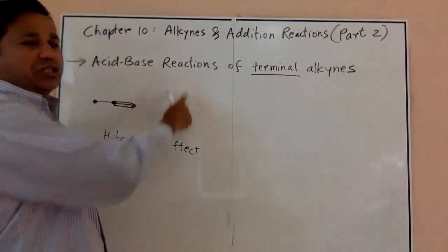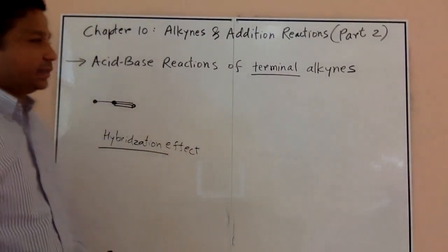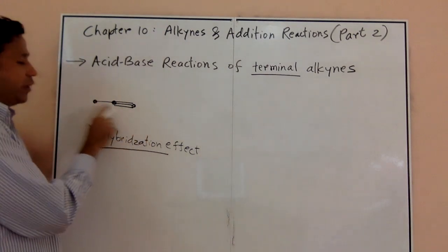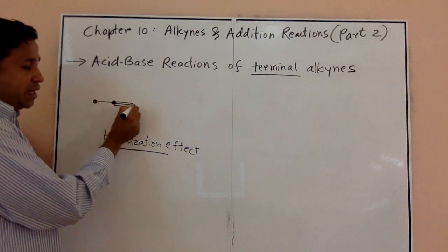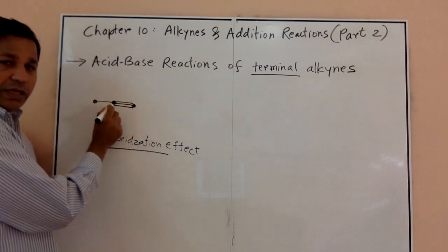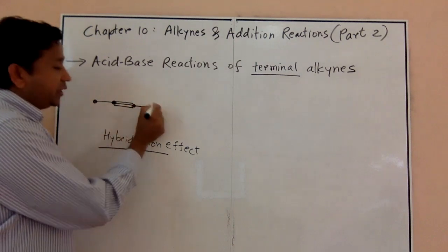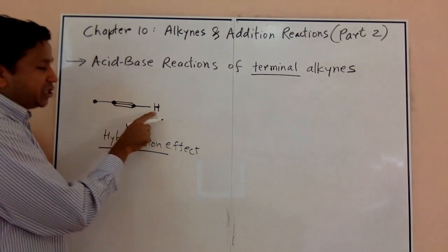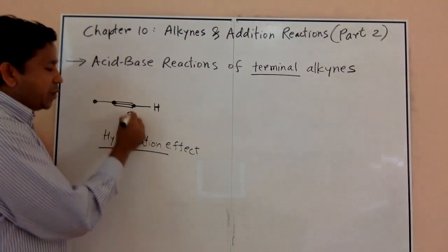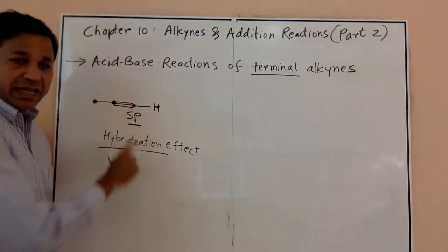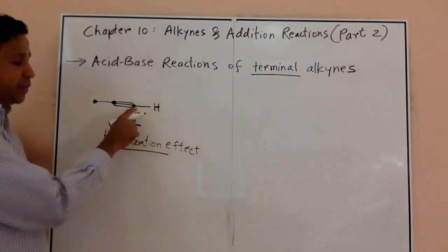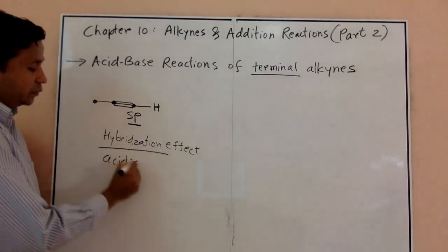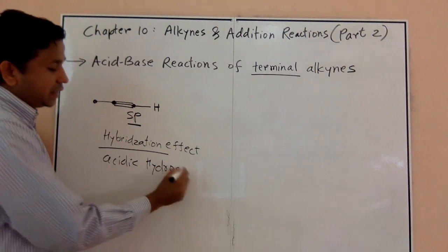Acid-base reactions of terminal alkynes. What's important about terminal alkynes? You have three carbons, and the triple bond is between two carbons. There's a hydrogen on that terminal carbon — attached to an SP carbon. A triple-bonded carbon is an SP carbon, and due to the hybridization effect, that hydrogen is acidic.